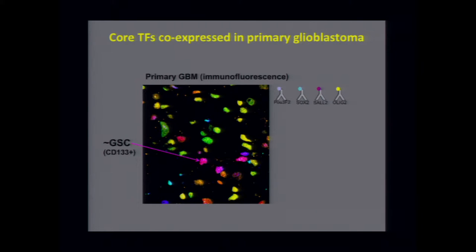By flow cytometry looking at all the markers, these cells are also CD133 positive, which is one of the markers that enriches for tumor propagation. So it's very likely that there are cells within primary tumors that look very much like the stem cells we functionally described in our model.